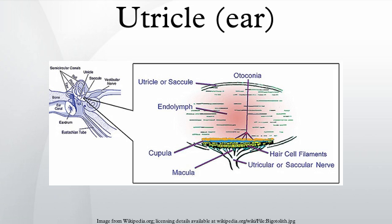These hair cells are mechanoreceptors which consist of 40 to 70 stereocilia and only one true cilium called a kinocilium. The kinocilium is the only sensory aspect of the hair cell and is what causes hair cell polarization. The tips of these stereocilia and kinocilium are embedded in a gelatinous otolithic membrane. This membrane is weighted with calcium carbonate protein granules called otoliths. The otolithic membrane adds weight to the tops of the hair cells and increases their inertia, which is vital to the utricle's ability to detect linear acceleration and to determine the orientation of the head.